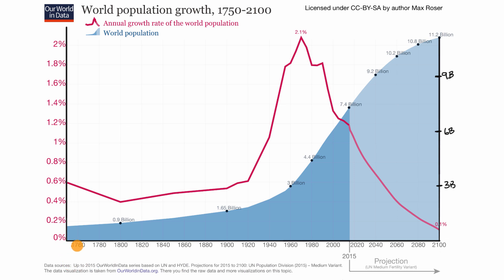Just to make sure we're understanding this graphic: our horizontal axis shows the years going by — you can view that as our time axis, starting with 1750 right over here, going all the way to 2100. When I'm making this video it is 2021, but this graphic was made in 2015, so everything beyond 2015 is considered to be a projection.